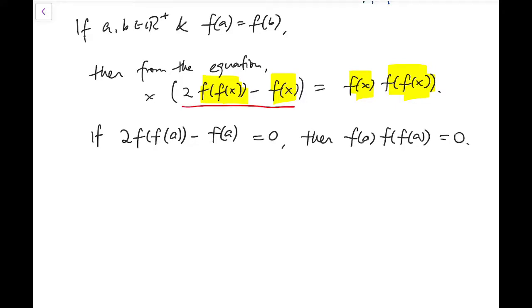So we can quickly say that it's a contradiction. So, therefore, a equals f(a) f(f(a)) over (2 times f(a) minus f(a)) equals this. I can simply replace all the f(a)'s by f(b)'s.